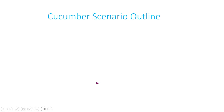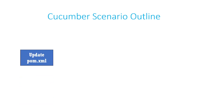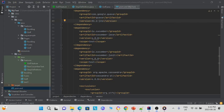This is how to create your own Cucumber scenario outline in 60 seconds. First, we must update our dependencies in our pom.xml file. This is an example pom.xml file with Cucumber dependencies.